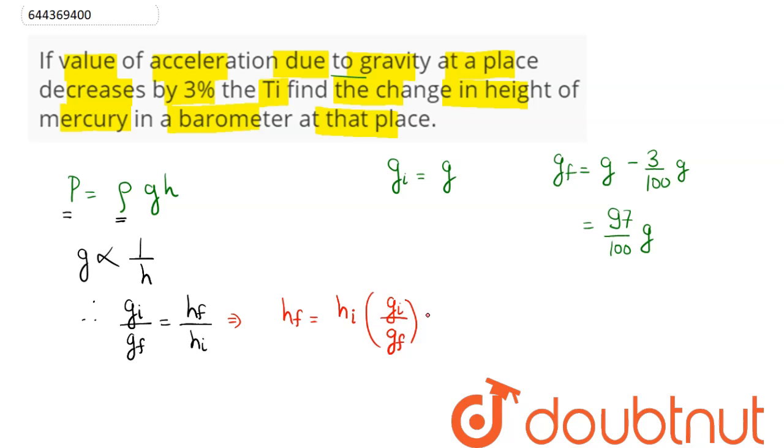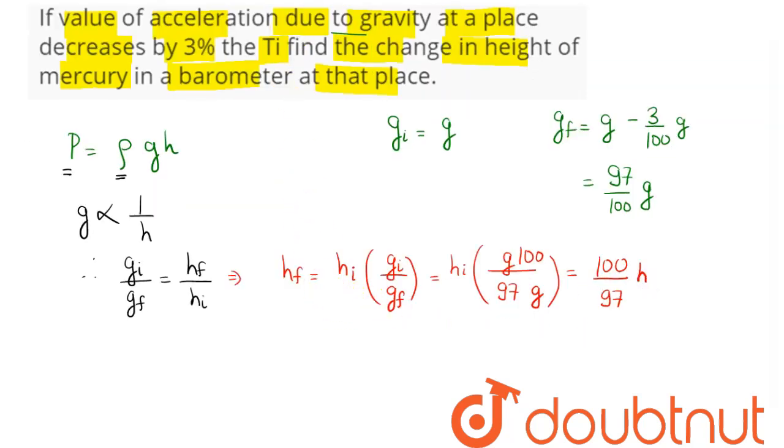Now substituting the value, initially the height in the mercury in a barometer was h_i. Initial g is g and final g is 97/100 times g. So this comes as 100/97 h, so we can see the height increases.